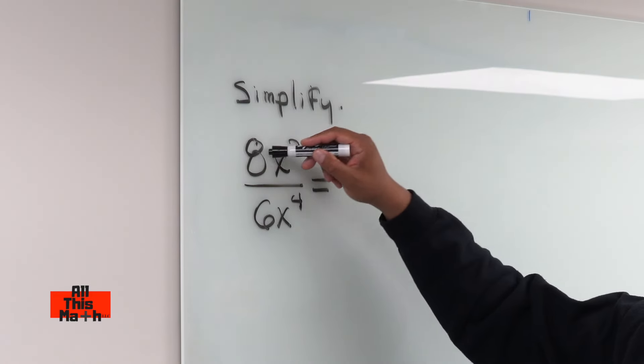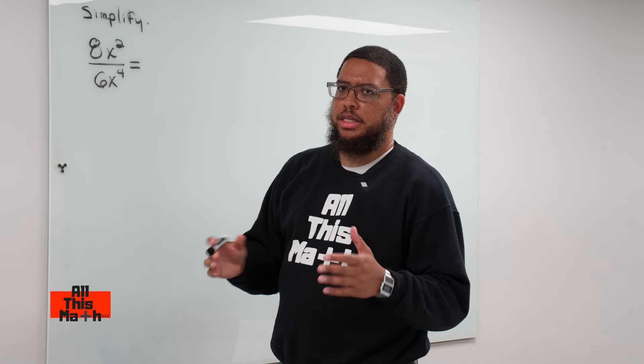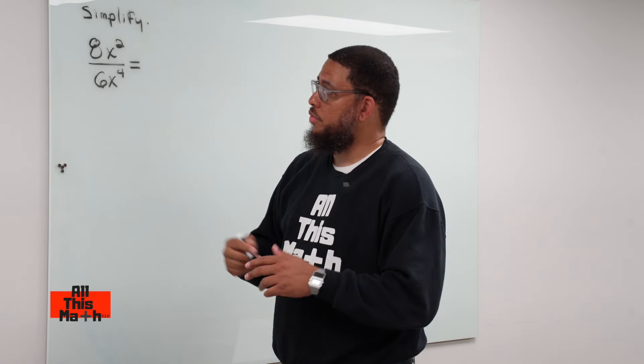So we look at this, and I see I have 8 over 6. 8 over 6 is 8 sixths. That's a fraction that can be reduced, so we can reduce that.